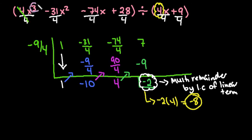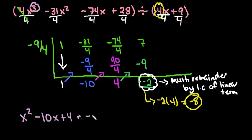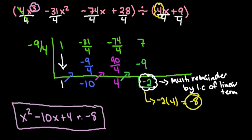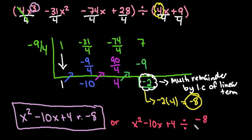When writing the answer, remember it's always one degree less than what we started with. So our answer is x squared minus 10x plus 4, with a remainder of negative 8. Alternatively, written in fraction form: x squared minus 10x plus 4, minus 8 over (4x plus 9).